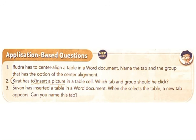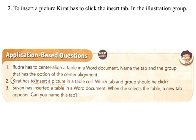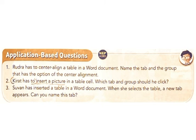2. Kirat has to insert a picture in a table cell. Which tab and group should he click? Answer: To insert a picture, Kirat has to click the Insert tab. In the Illustrations group, click the Pictures option. 3. Suvan has inserted a table in a Word document. Can you name this tab? Answer: Table Tools.